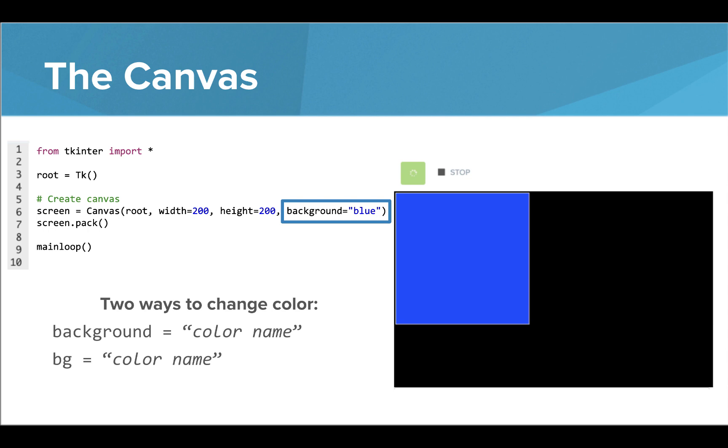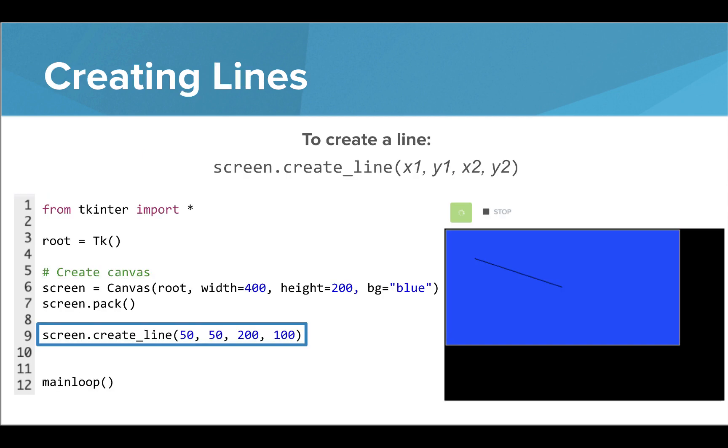Now let's see how we can draw on our canvas. We can draw a line from one point to another by giving the coordinates of the starting and ending points using screen.create_line. The beginning point of our line is located at 50, 50 and the ending point is at 200, 100.